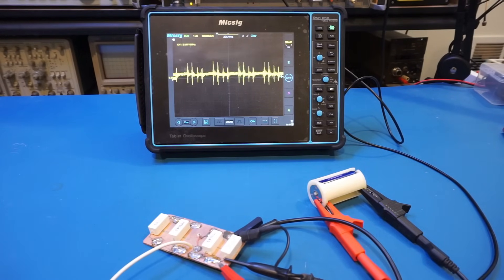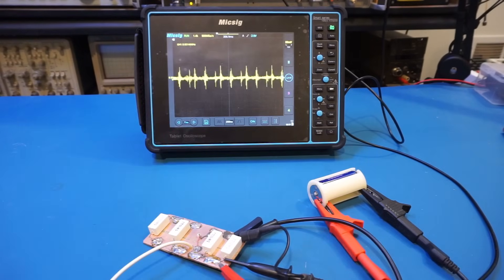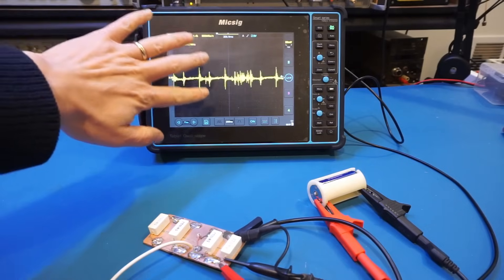You can see we set to 20 millivolts per division and it's in AC coupling. So let me put the battery in. And you can immediately see the ripple here. And this is due to the switching nature of the DC to DC conversion. And you can see the ripple is roughly 40 millivolts from peak to peak.